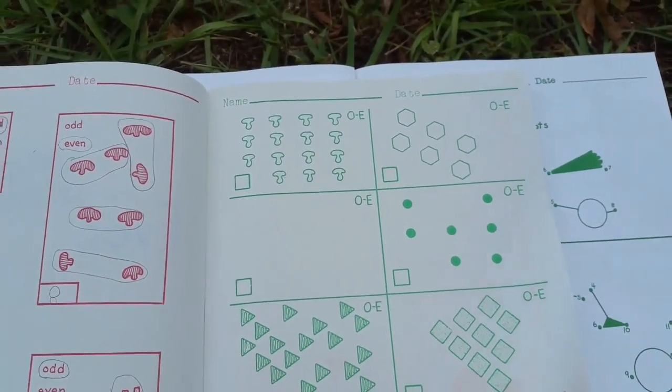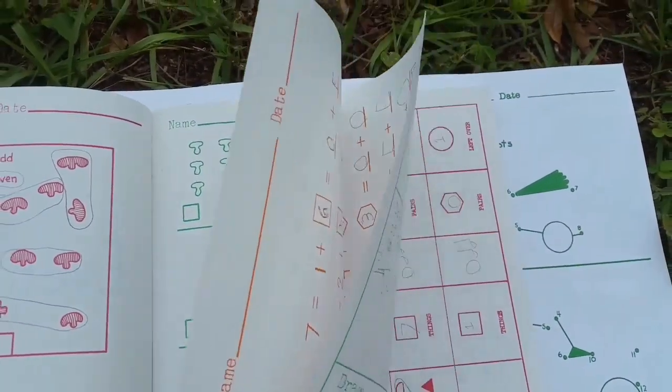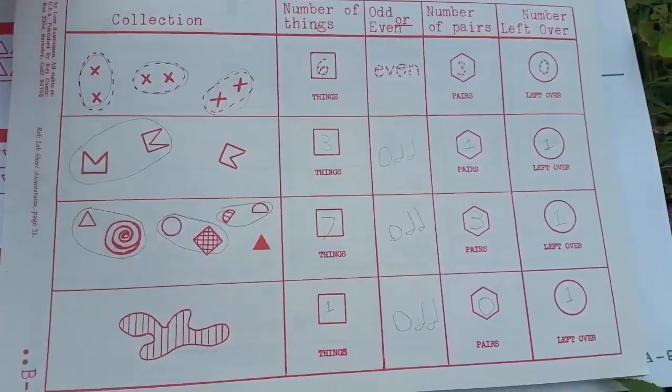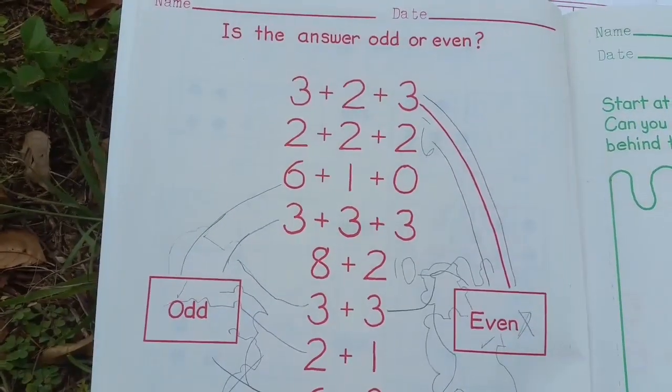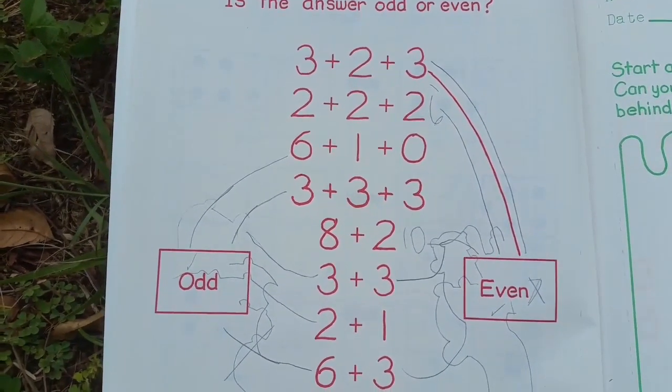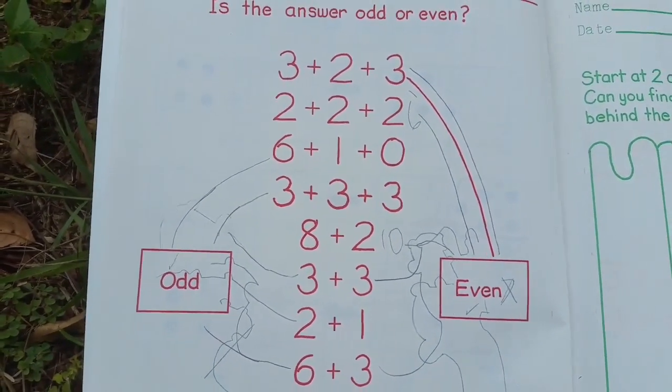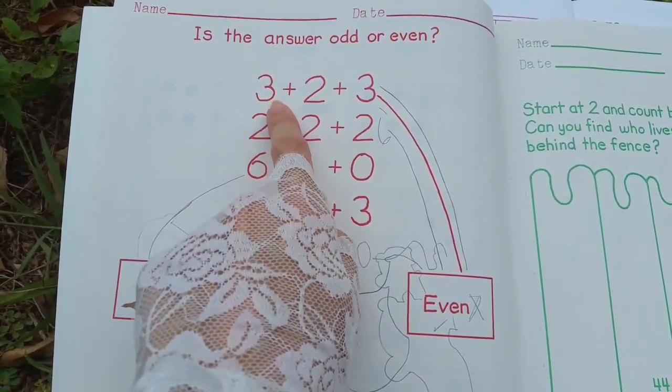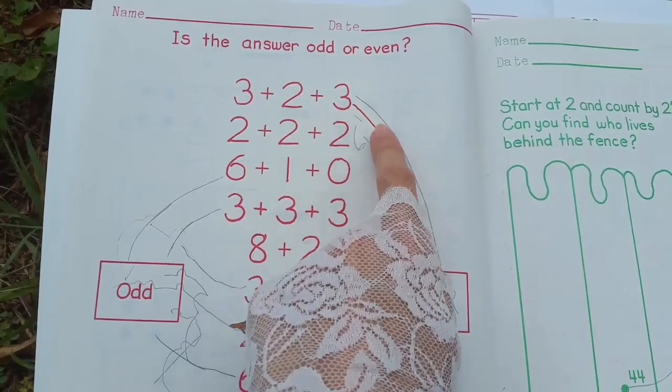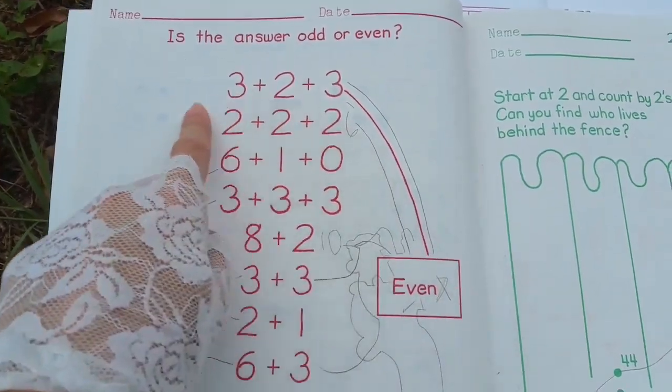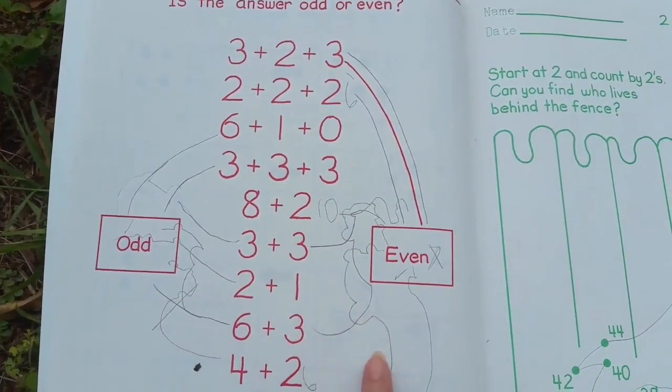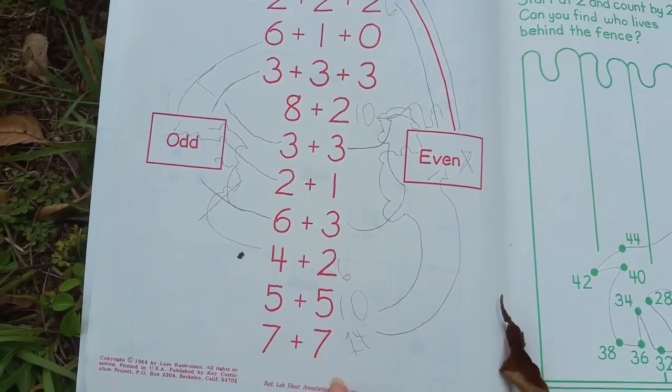Here's another example where we did odds and evens. Now in this one, this is the red book so this is more like a second grade type book. We are expected to know the answer and then say whether it is even or odd. So this was a tad challenging and there's no equal sign so it was a little bit tricky for my daughter at first.